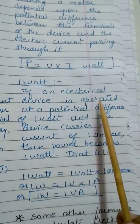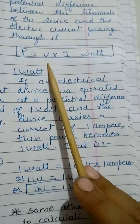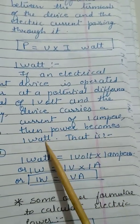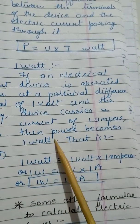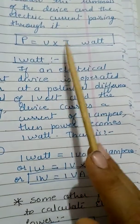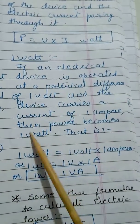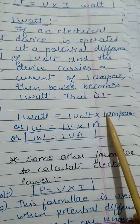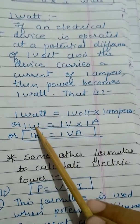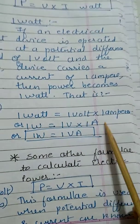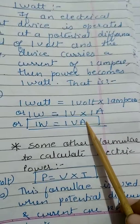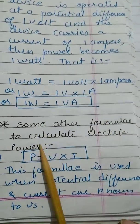What is one watt? If an electric device is operated at a potential difference of one volt and the device carries a current of one ampere, then the power becomes one watt. So one watt equals one volt into one ampere — that is, 1 W equals 1 VA.